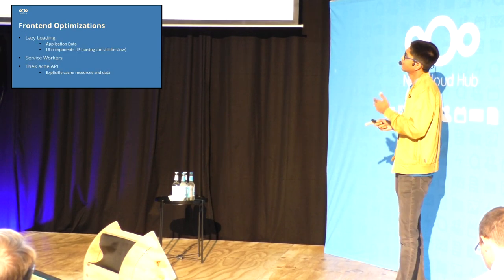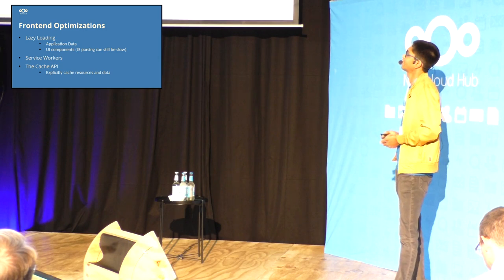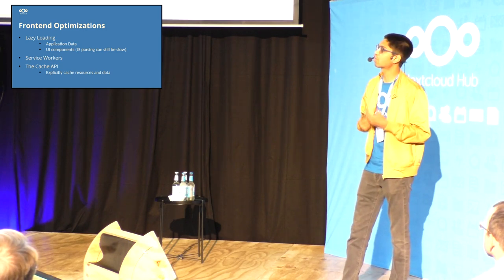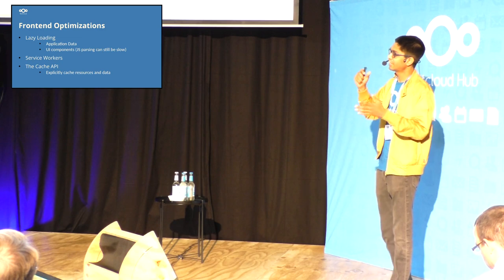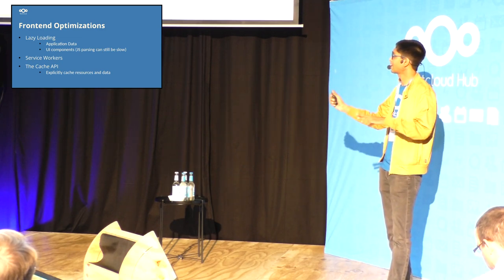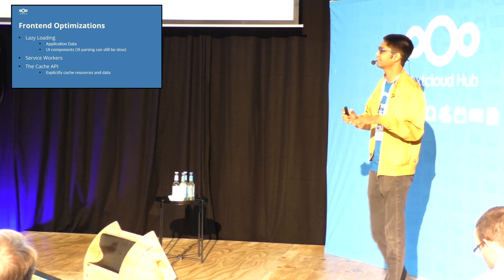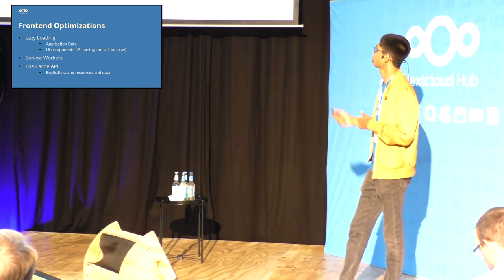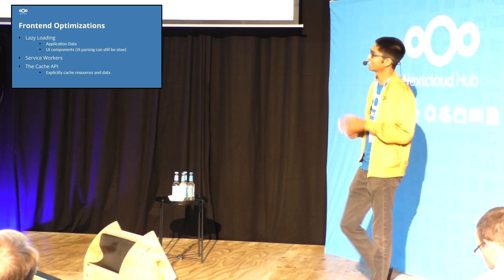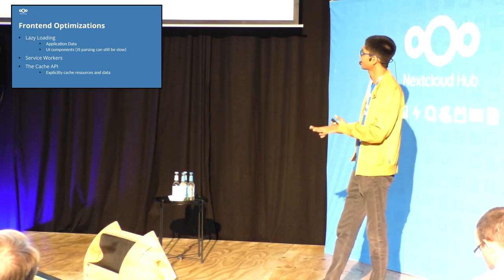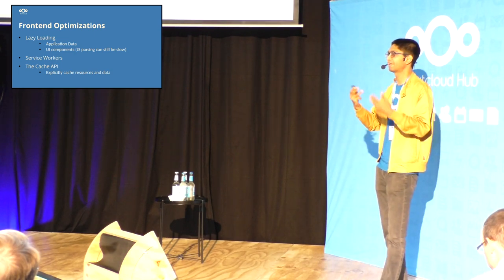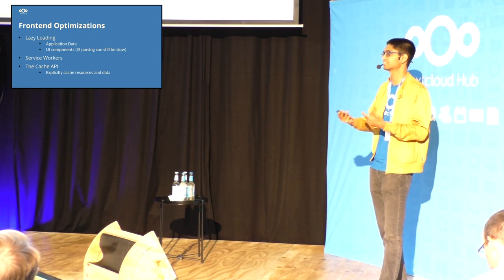The third area is front-end optimizations. The big one is lazy loading — not only data, but also your components themselves. JS parsing is still slow in 2023, so lazy loading your components will give a significant performance boost. One more overlooked API is the browser's Cache API, which lets you explicitly put things in your cache. This can help a lot by making your caching much more explicit on the front end.